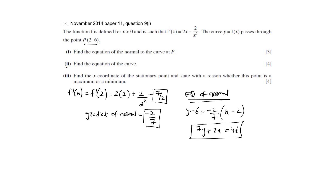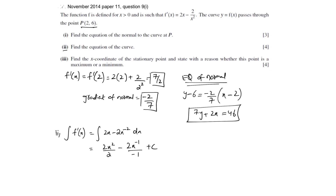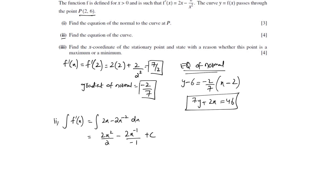In the second part, they are saying find the equation of the curve. In order to find the equation of the curve you need to integrate the gradient function. When you integrate the gradient function you get 2x squared over 2 minus 2x raised to the power of minus 2 plus 1 over negative 1, plus a constant of integration. Simplifying, you get x squared plus 2 over x plus c. That's f of x, the equation of the curve. This is just the general formula because you don't know the value of c.